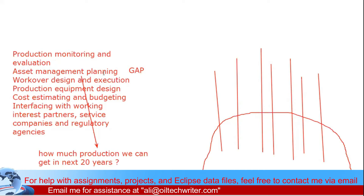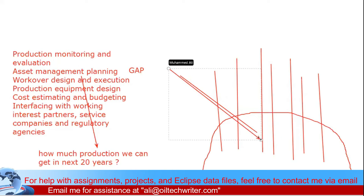The third job is work over design and execution. Work over means the well was already there but due to corrosion or other damage it needs to be fixed again — like reconstruction of your home. There are many problems that can happen in the well, and we'll talk about what kind of work over jobs are needed for a production engineer to manage.